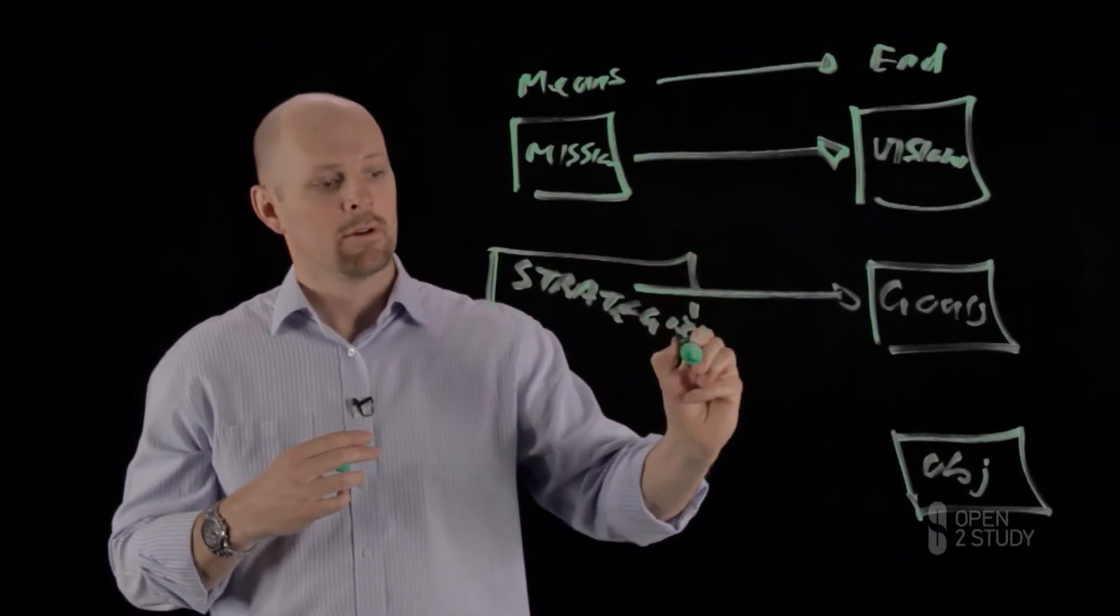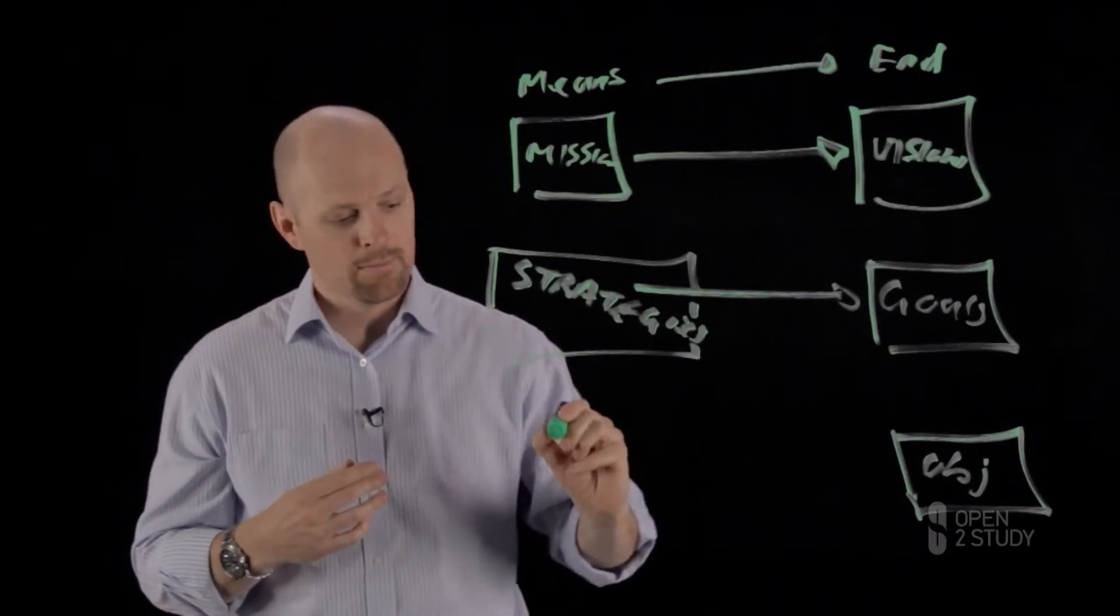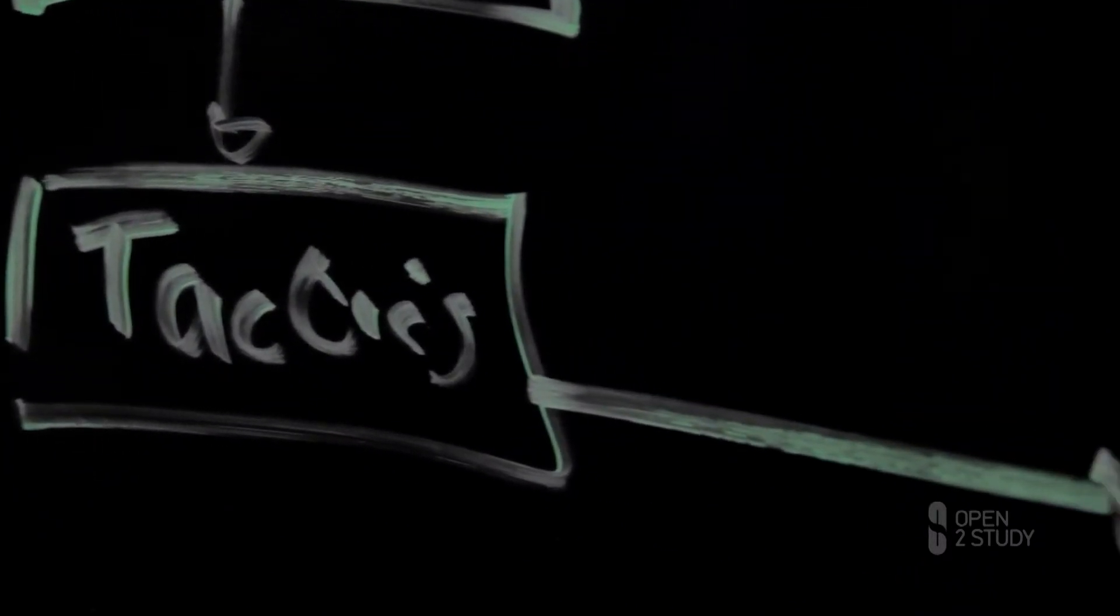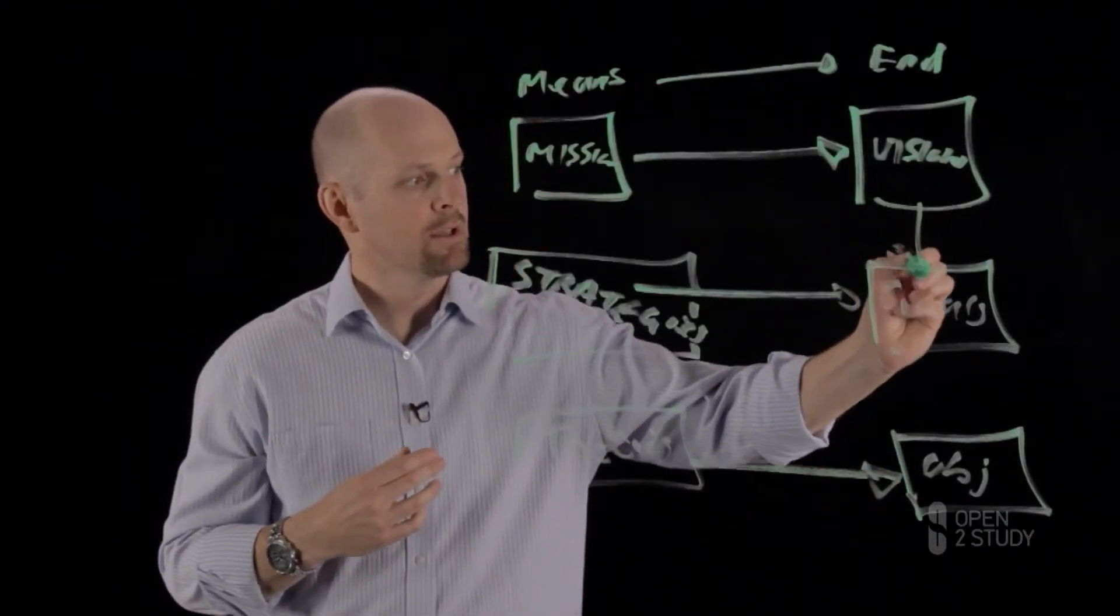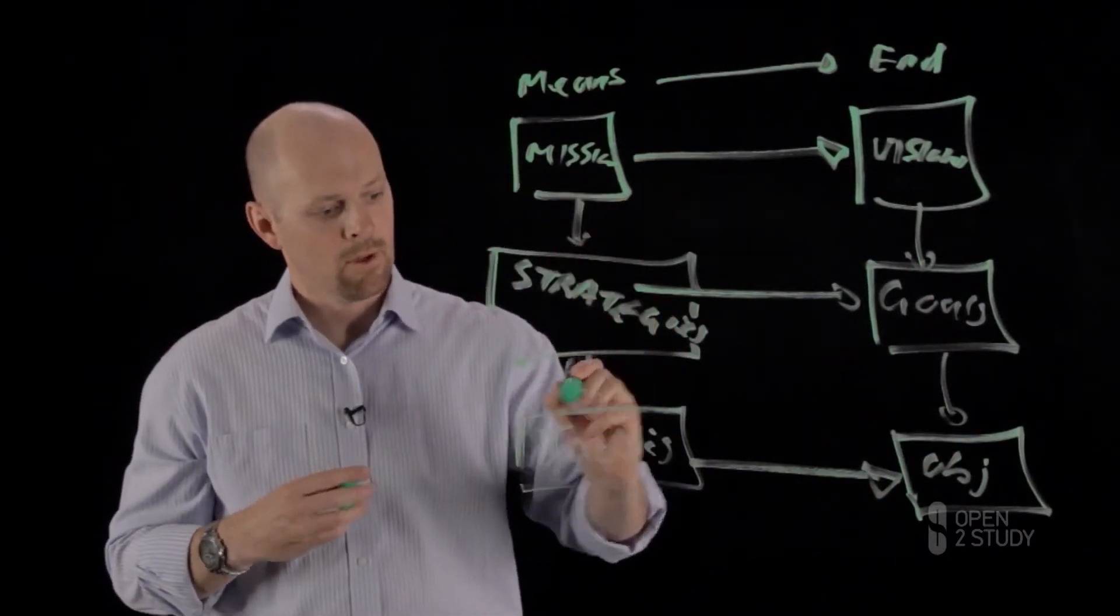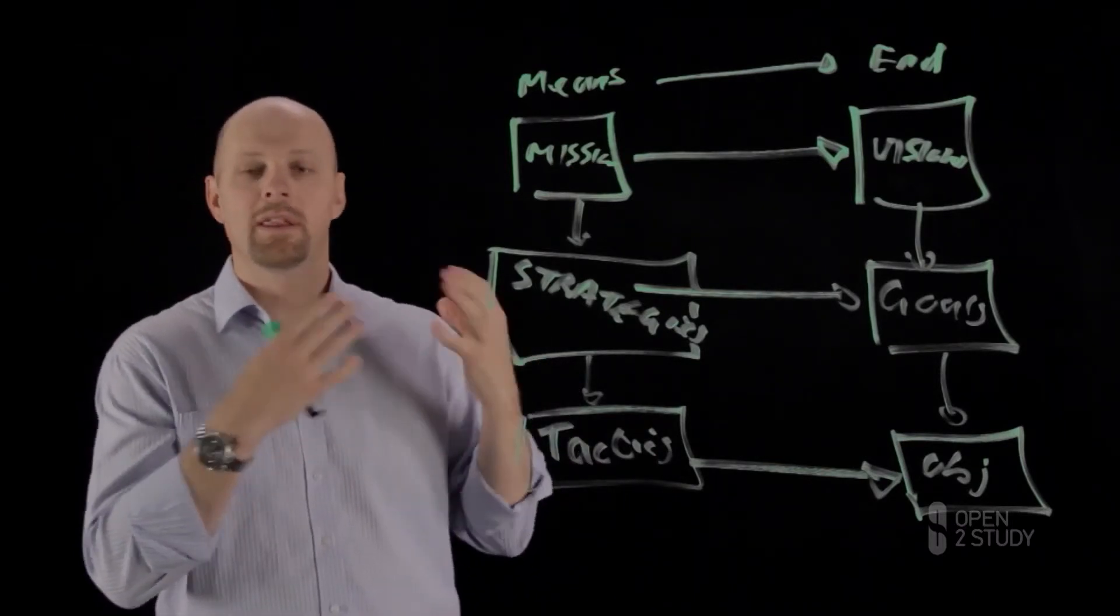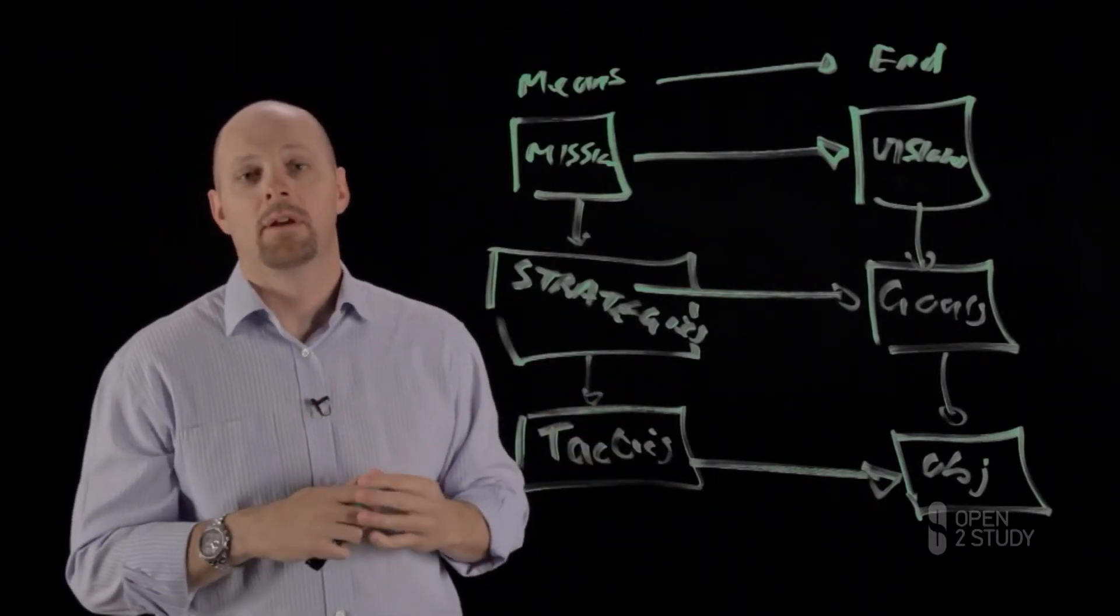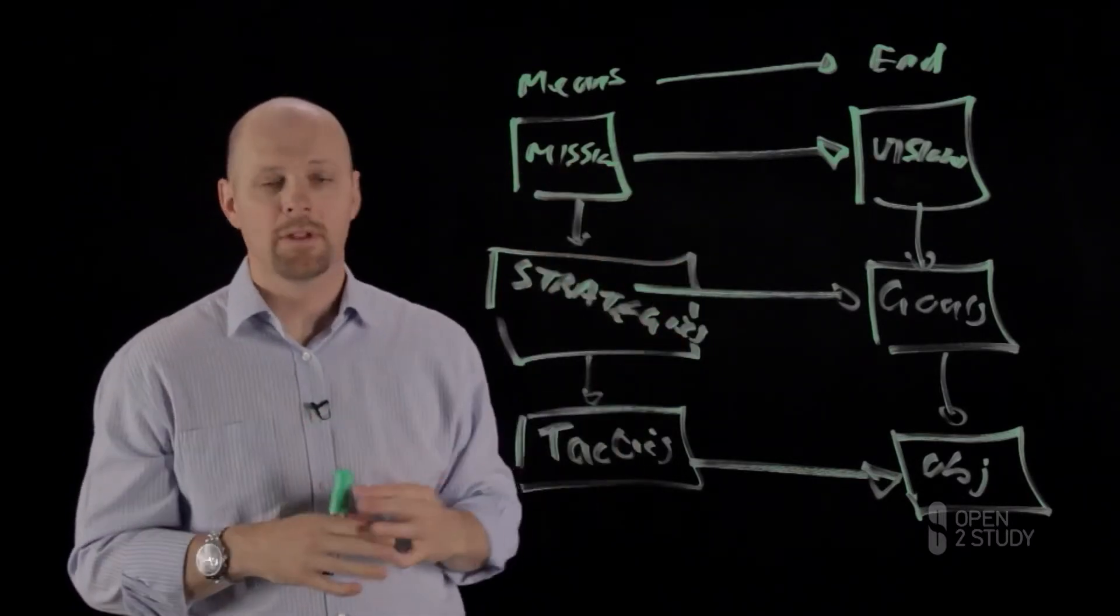This decomposes even further. How do I achieve my objectives? You achieve your objectives through a series of tactics. All of this is interconnected. Your vision decomposes that way and your mission decomposes that way. This is a very good model to base your understanding of those strategic objects, and we often refer to that as a meta model. It links all of these pieces together.